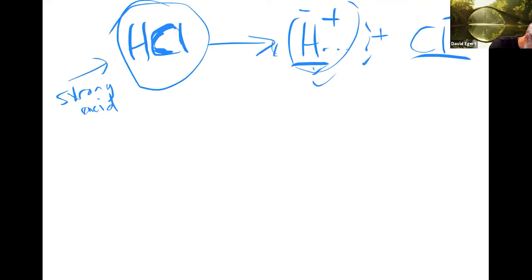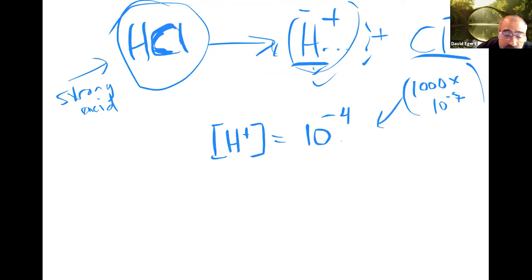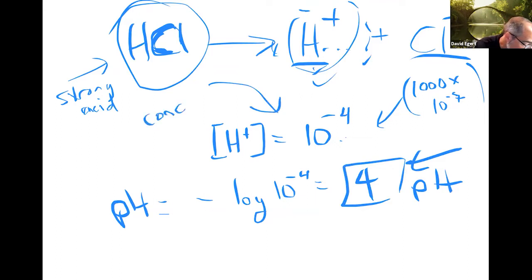HCl adds lots of H pluses. In addition to the original H pluses in the water, I've got a bunch more donated by the HCl. If my H+ concentration was 10 to the minus seventh and I want it a thousand times higher, that would be 10 to the minus fourth. Ten to the minus fourth is one ten-thousandth — a thousand times higher. Plugging into the formula: minus log of 10 to the minus fourth is four.